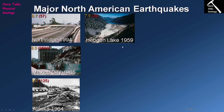The Hebgen Lake earthquake of 1959 was a magnitude 7.5 — pretty large — and it only killed 26 people, again because it occurred in a relatively sparse, mountainous area. What makes the Hebgen Lake earthquake particularly interesting is that it triggered an extremely large landslide that blocked the river valley, causing a lake to build up behind it. This lake is actually called Earthquake Lake.